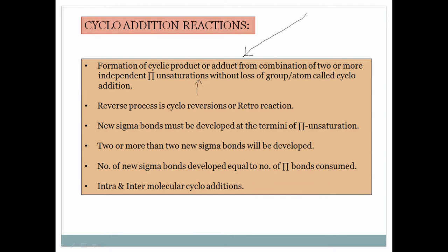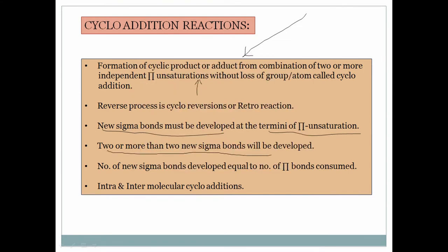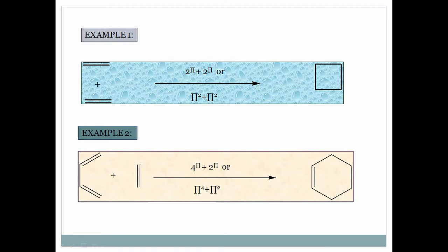The reverse process of this reaction is called the retro reaction. New sigma bonds must be developed at the termini of the pi saturation — two or more new sigma bonds will be developed. The number of sigma bonds developed is equal to the pi bonds consumed. Cycloaddition can be intramolecular or intermolecular.